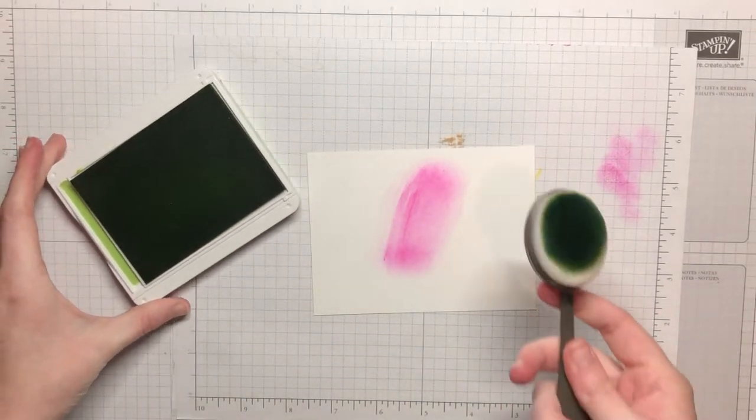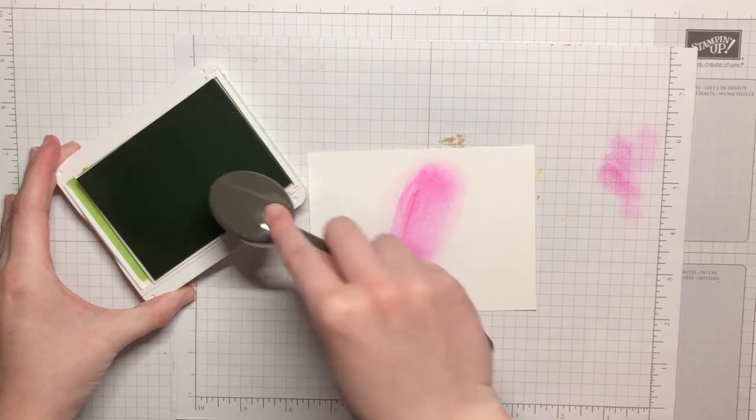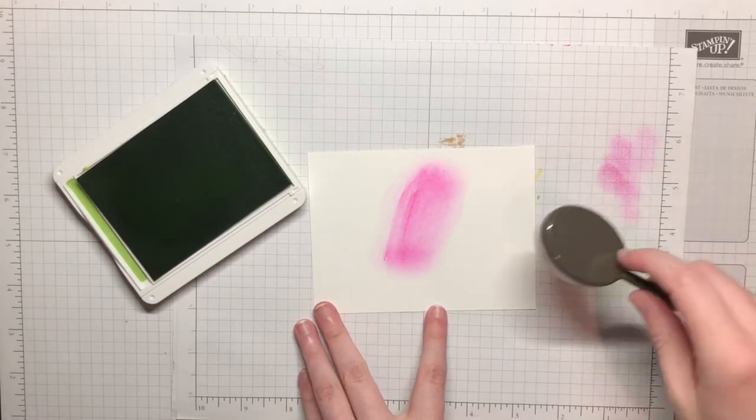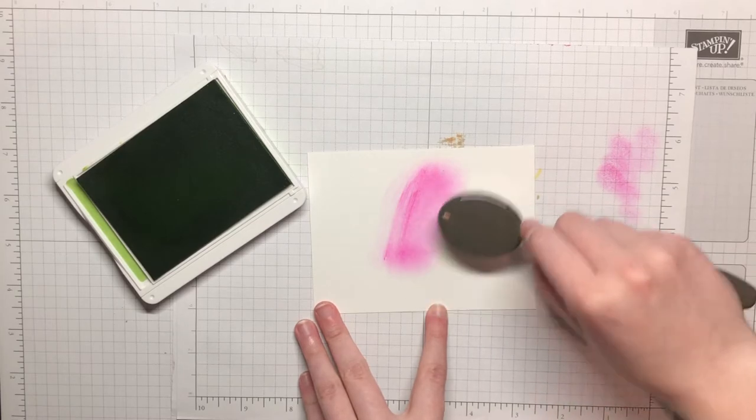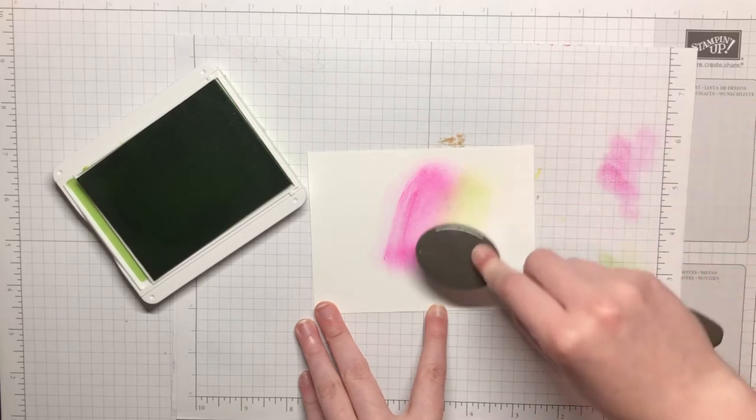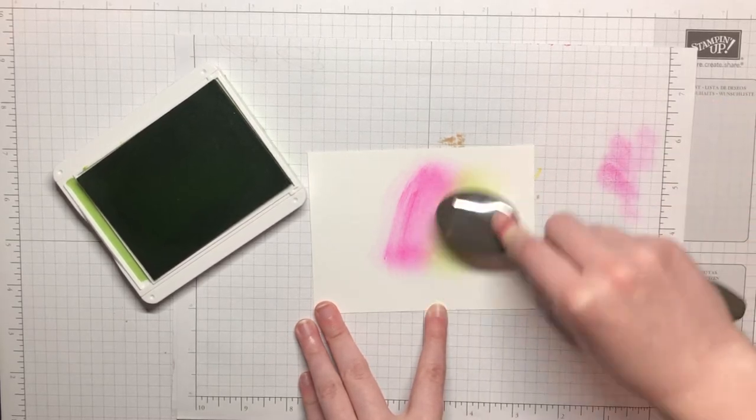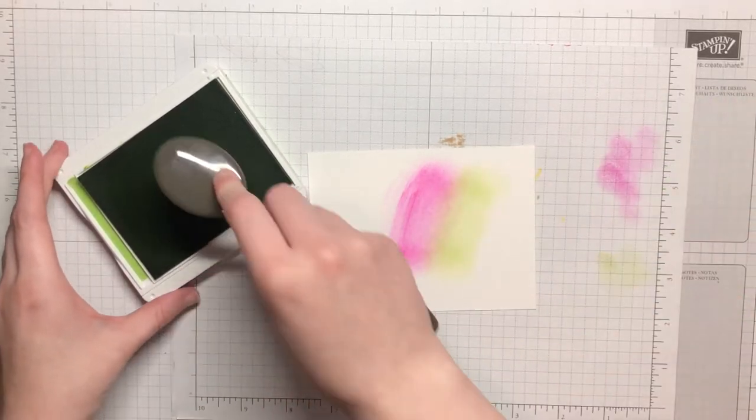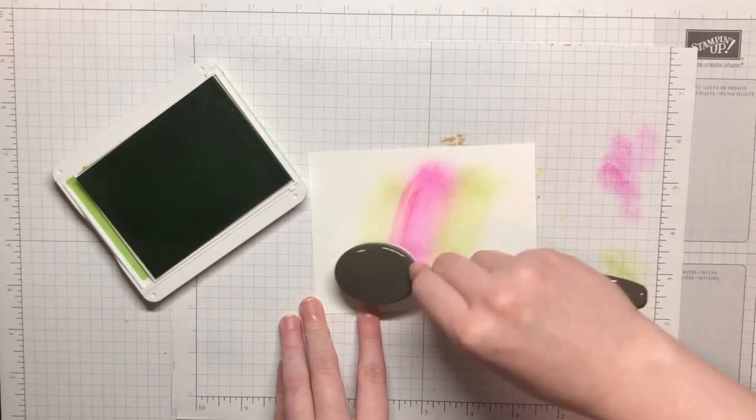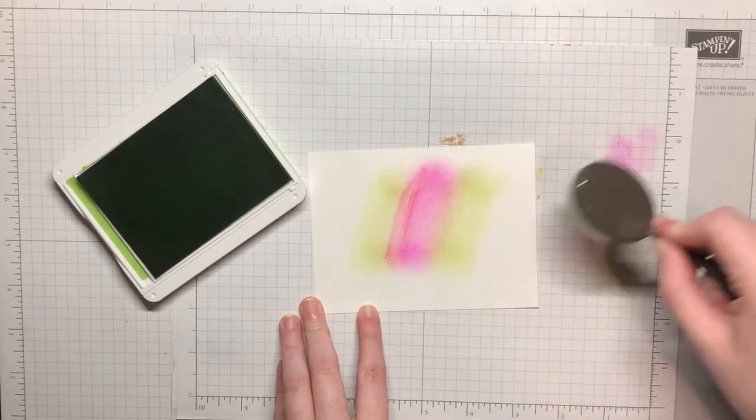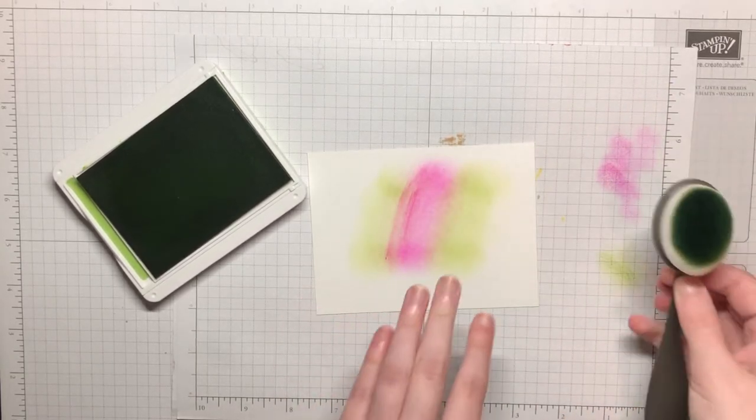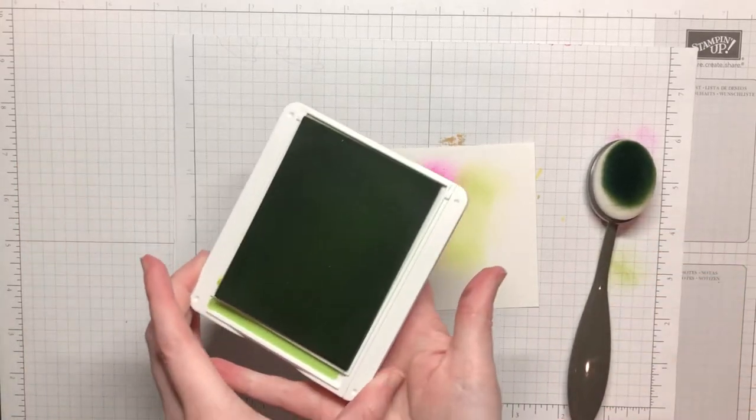Now I've got granny apple green and my green blending brush. So again I'm gonna pick up some of that color and just dab on the side for just a second. And then I'm gonna go in right next to that magenta madness and add some of this green color. And again you can just play around with this so you can do it very lightly or you can do it a little bit more firm.